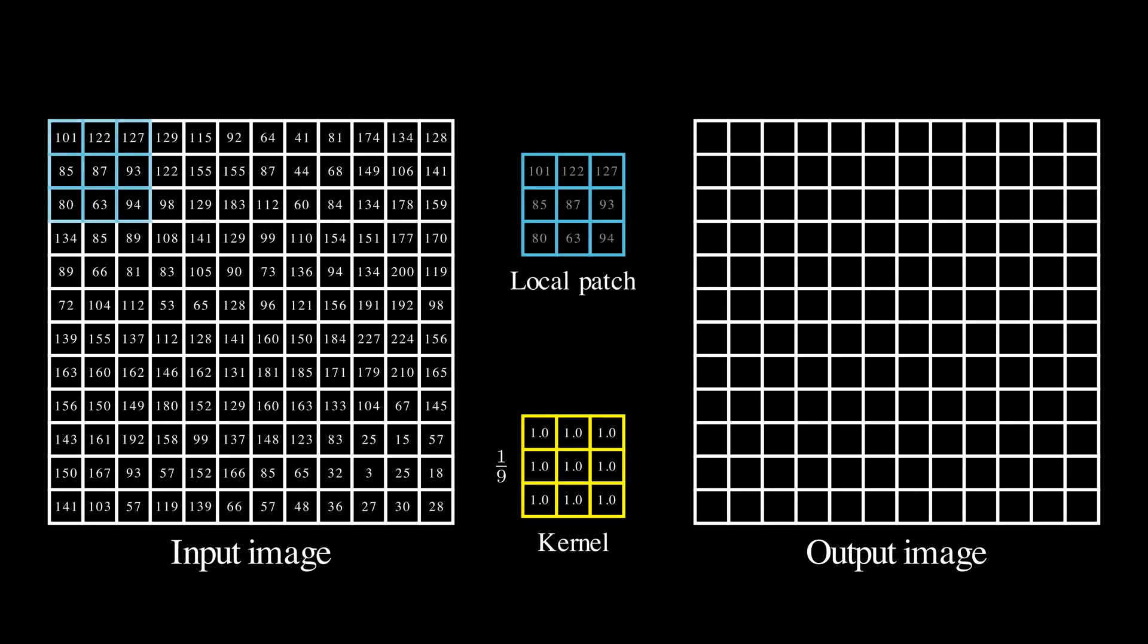We take a 3x3 patch of the image, sum up all the values, divide it by 9, and place the result in the output image. Then we slide to the next pixel and repeat.